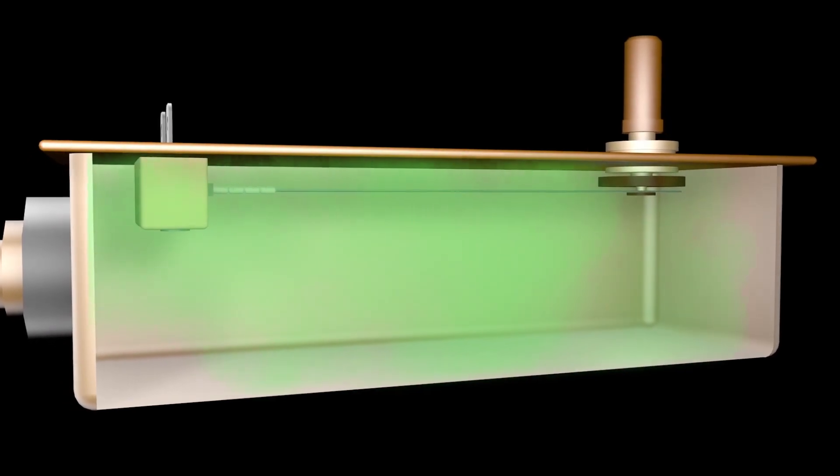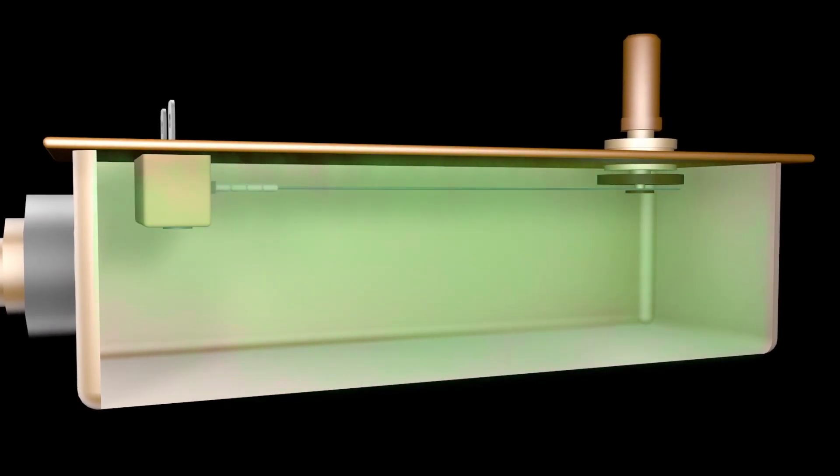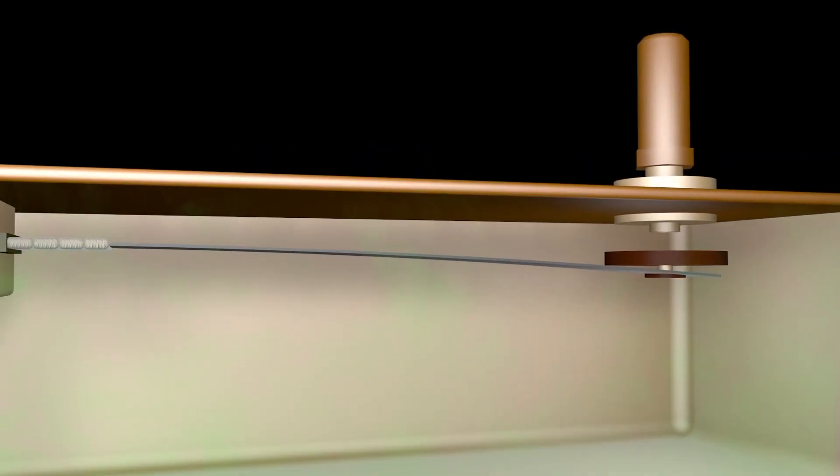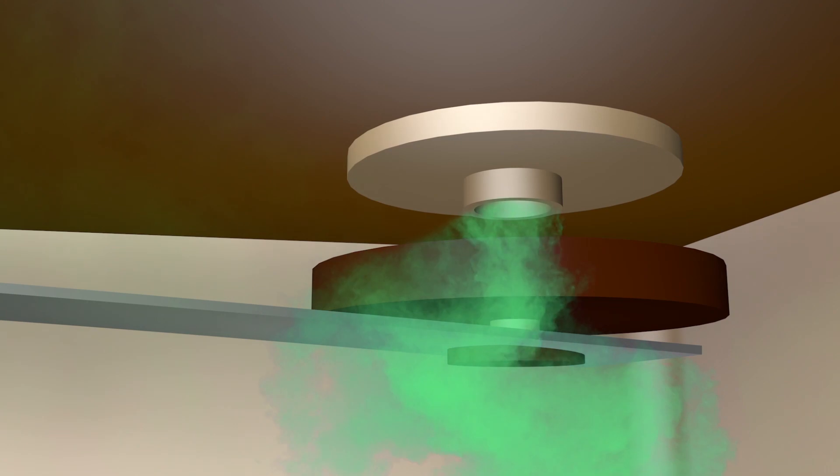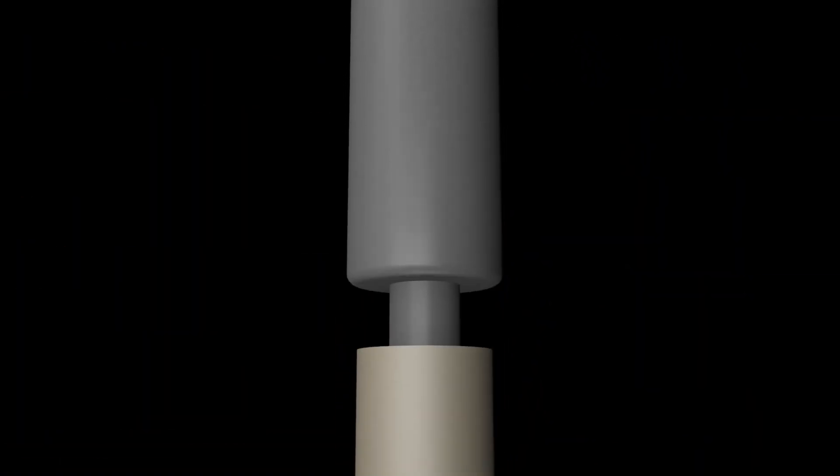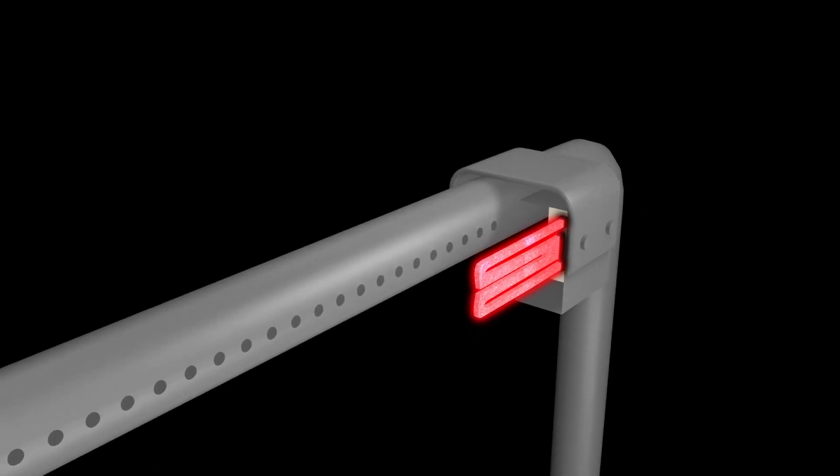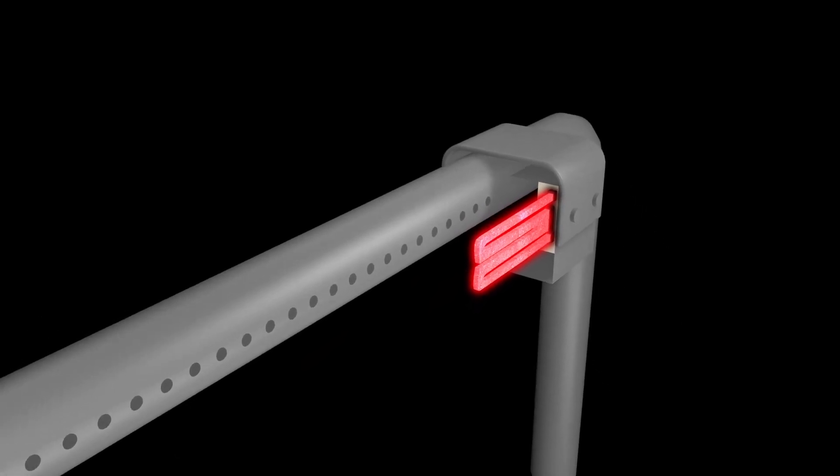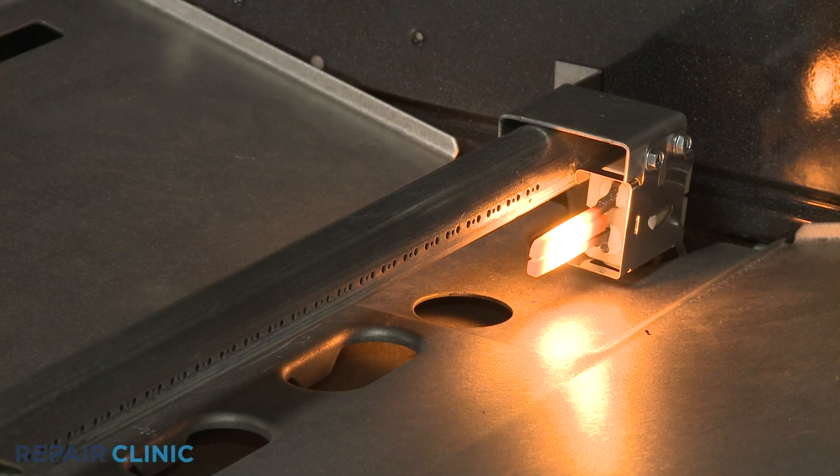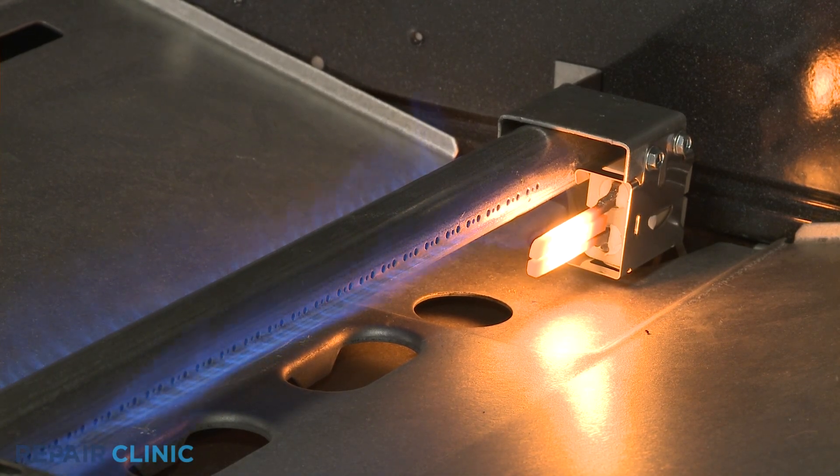Inside the valve is a bi-metal arm that reacts to the heat generated by the amps. Once sufficient amps pass through the valve, the arm flexes and opens, releasing gas into the oven burner tube. The gas travels through the burner tube until it reaches the bake or broil igniter. By this time, the igniter temperature is over 2,000 degrees Fahrenheit, so the gas is easily ignited and the appropriate burner will begin to heat.